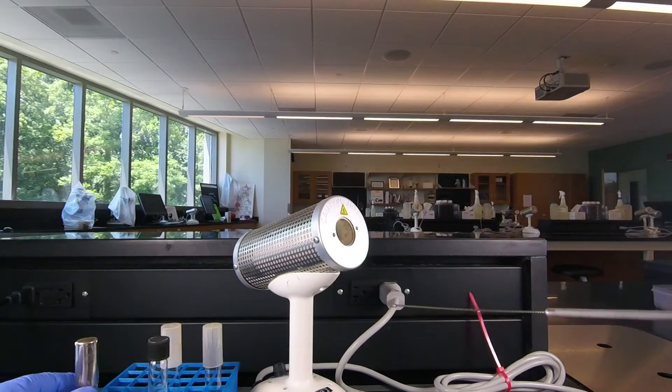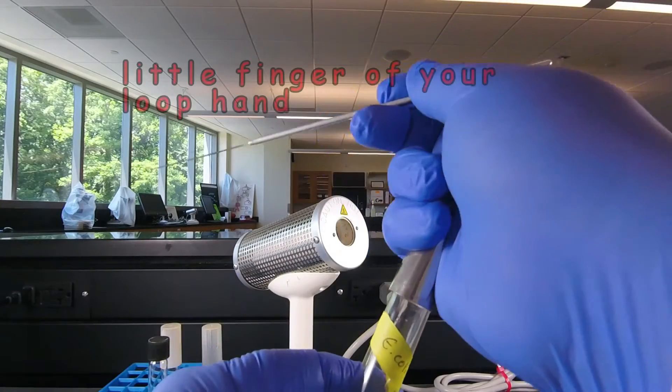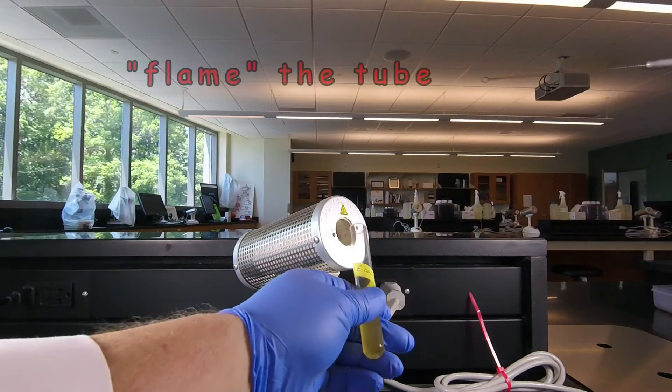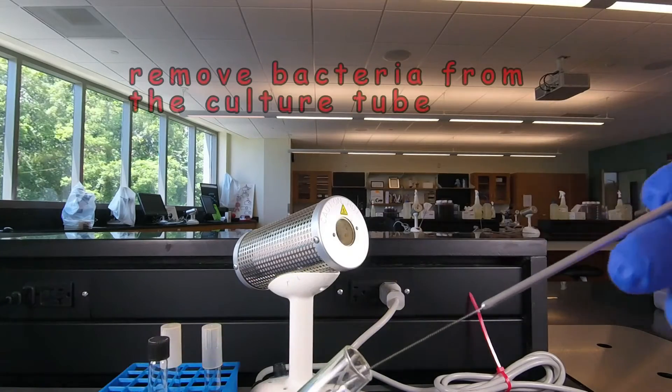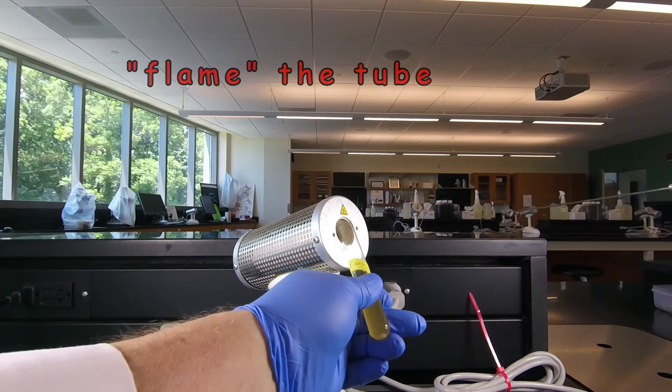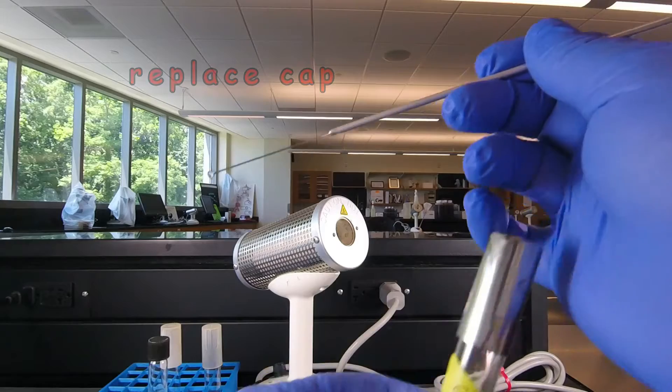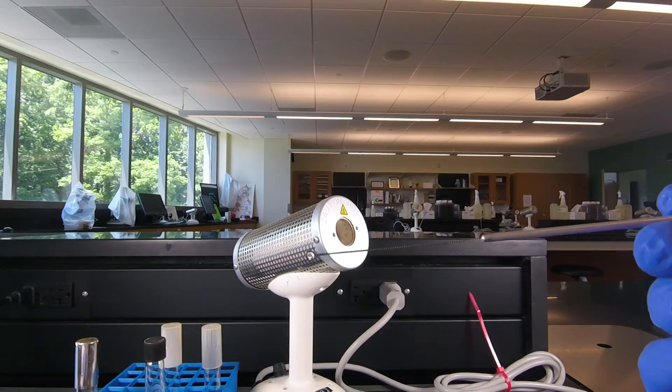Then we take our tube of bacteria. Now once again this is a tube of E. coli. We remove the cap with the little finger of the loop hand. Immediately flame the tube for three seconds. Remove a loop full of the E. coli. Flame the tube again. And put the cap back on. So now we have the E. coli on our inoculating loop.